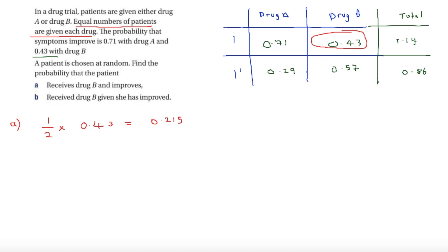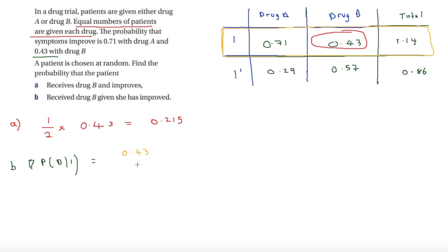Part B asks for P(drug B | improved). Given that they've improved, we look only at the improved column. That's 0.43 divided by the total improved of 1.14, which equals approximately 0.377.